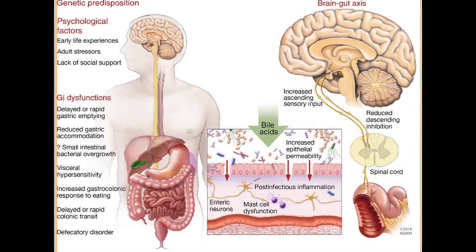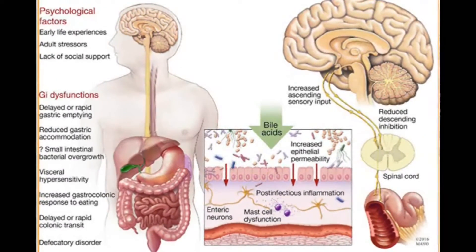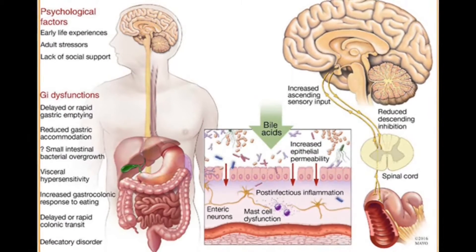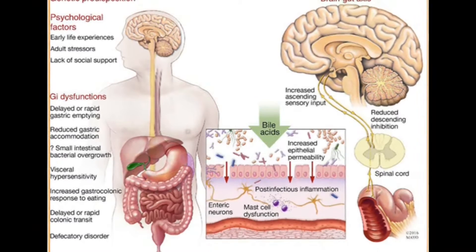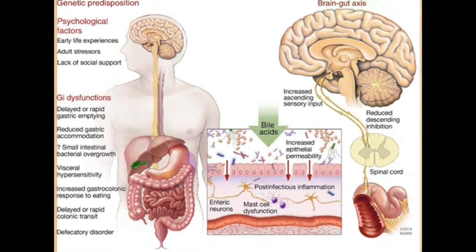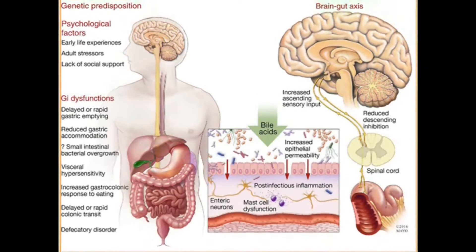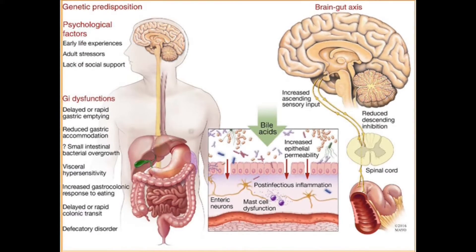The left side of the slide shows that psychological factors such as early life experiences, including abuse, adult stressors including divorce, and a lack of social support, also predispose to abdominal pain. Diagnostic testing should be limited and tailored to the clinical features, alarm symptoms, symptom severity, and response to previous therapy. In most patients, symptoms alone suffice to diagnose functional GI disorders.